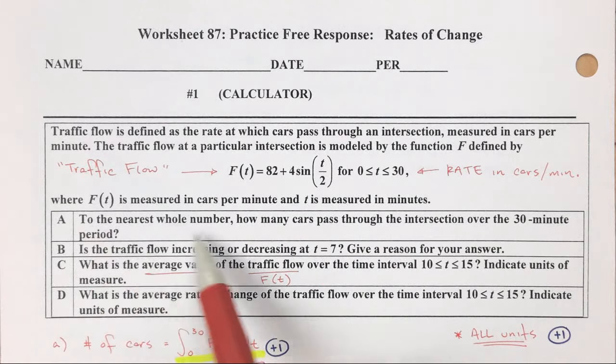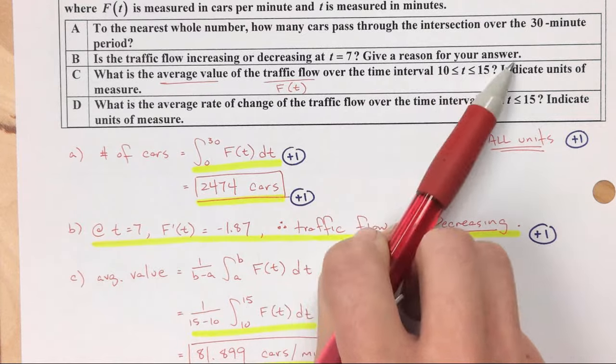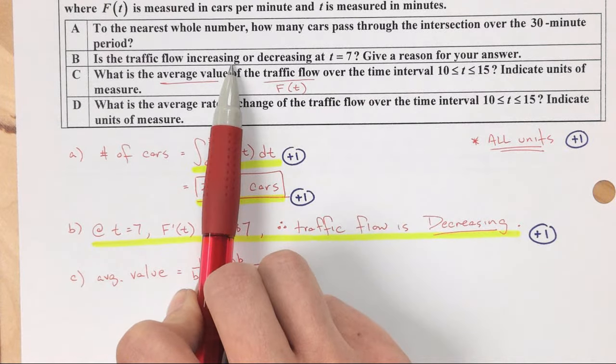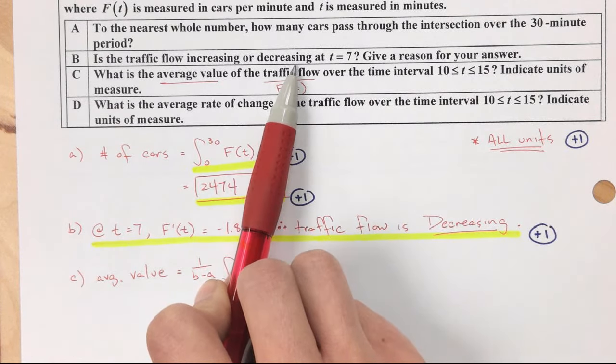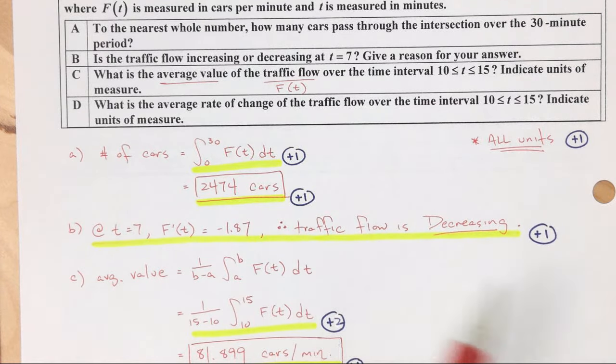Part B. Is the traffic flow increasing or decreasing at t equals 7? Give a reason for your answer. So this is like having to give multiple parts for your answer. You can't just say increasing because, and you can't say decreasing because, and then you can't just have part of it.